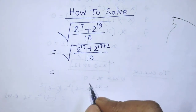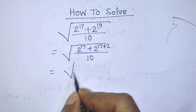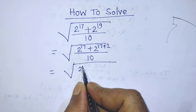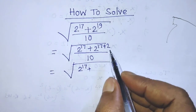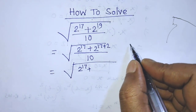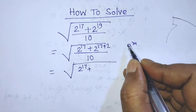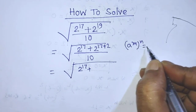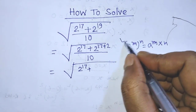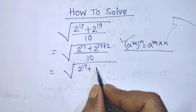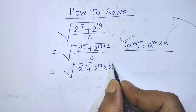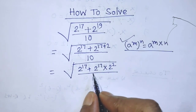Again we have to write the square root. In the place of numerator, again we have to write 2 to the power 17 plus — so to simplify this exponential form, we have to apply the formula: a to the power m, whole to the power n, is equal to a to the power m times n. So according to this formula, we can write 2 to the power 17 times 2 to the power 2, over 10.